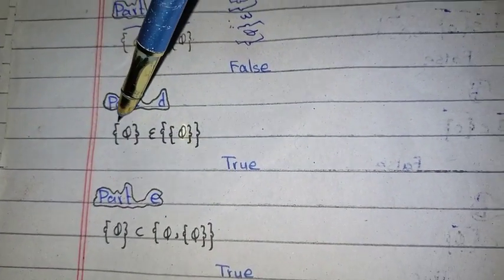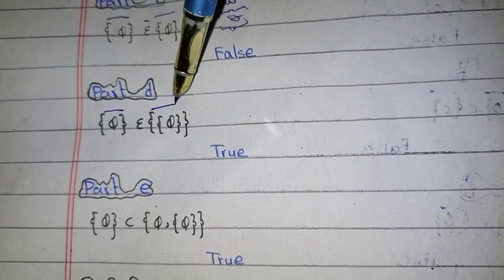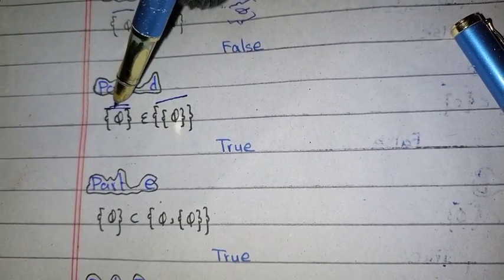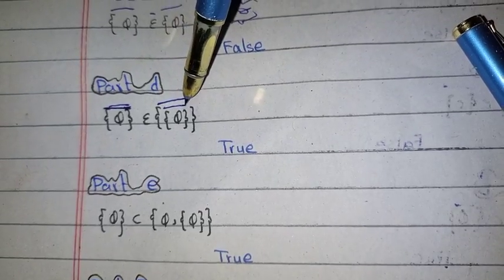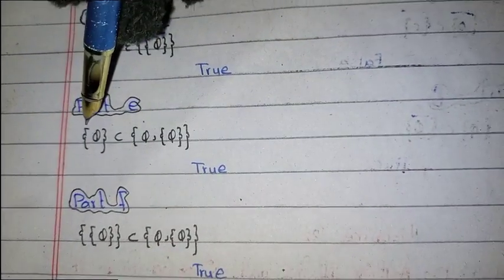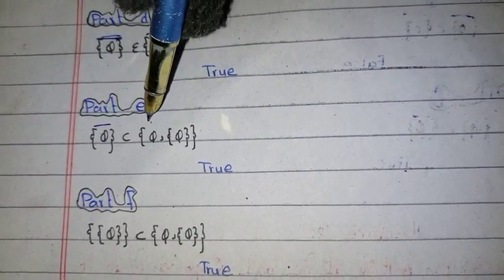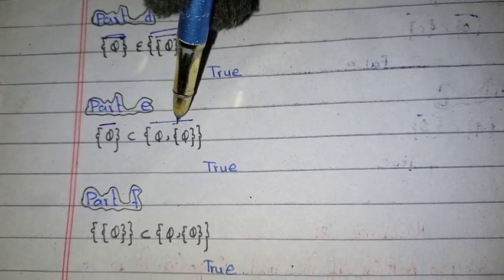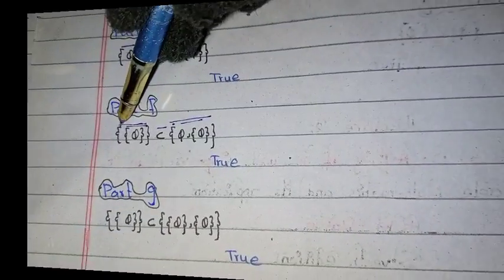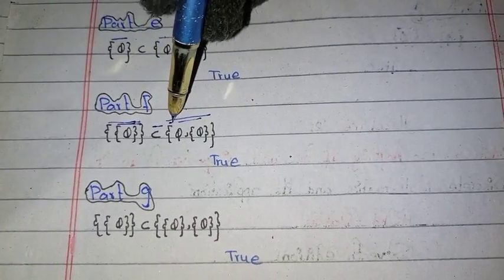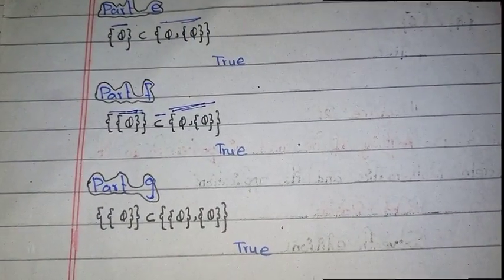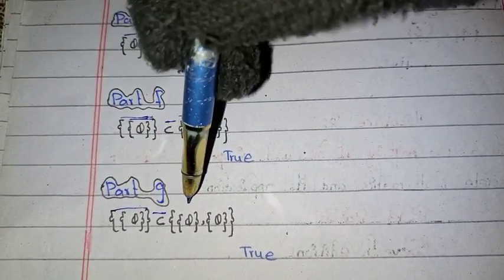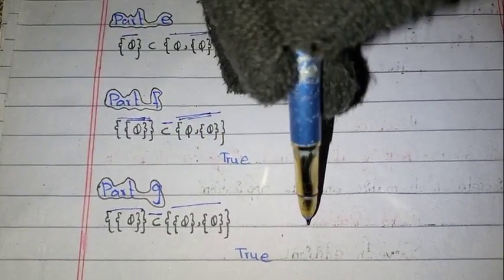Part D: this element is an element of this set. That is true because this element is present in this set. Part D also asks whether this is a proper subset of this set — that is true because these elements are present in this set.